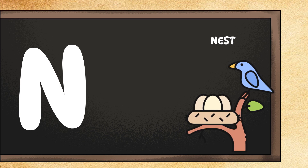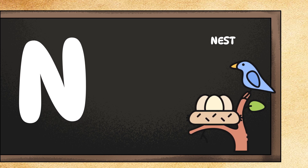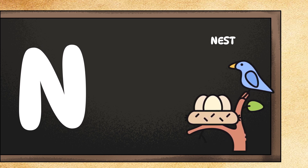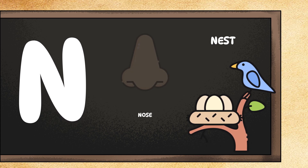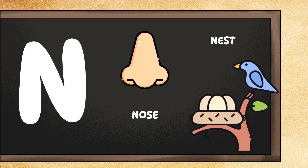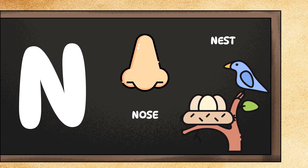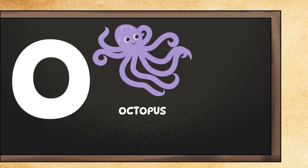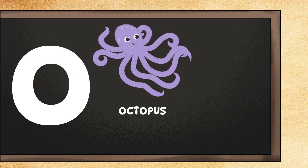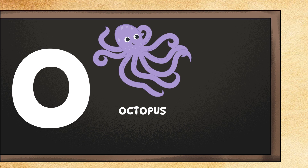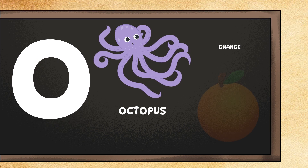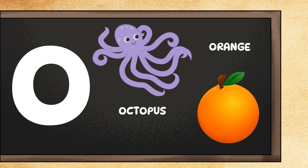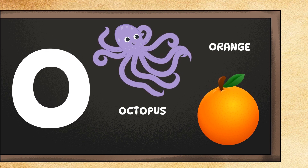N is for nest. Can you make a cup shape with your hands like a bird's nest? Good job! N is also for nose. Can you wiggle your nose? Wiggle wiggle! O is for octopus. Can you wiggle eight imaginary arms like an octopus? Terrific! O is also for orange. Can you peel an imaginary orange? Peel peel!